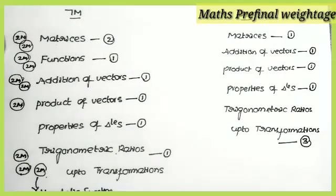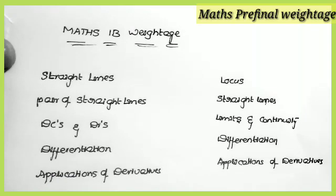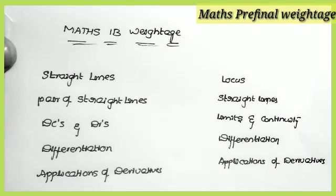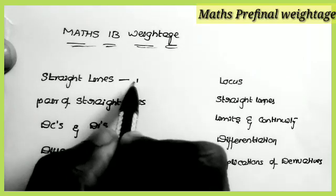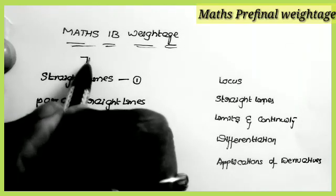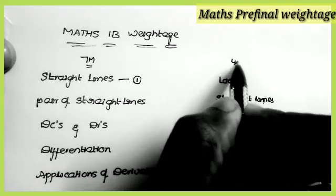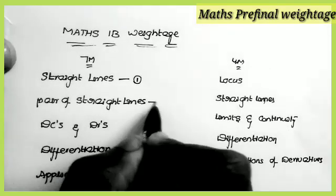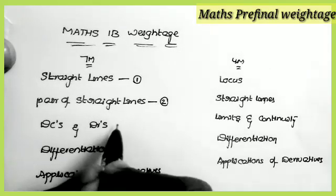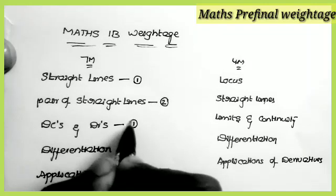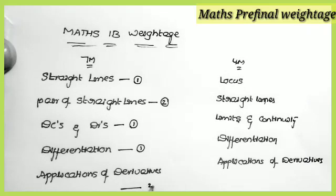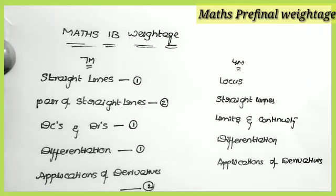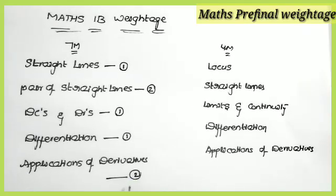Now coming to Maths 1B. From Straight Lines: one seven-mark question comes in the examination. From Pair of Straight Lines: two questions. From 3D and Direction Cosines: one question. From Differentiation: one question. From Applications of Derivatives: two questions — one from Tangent and Normal, and one from Maxima and Minima.